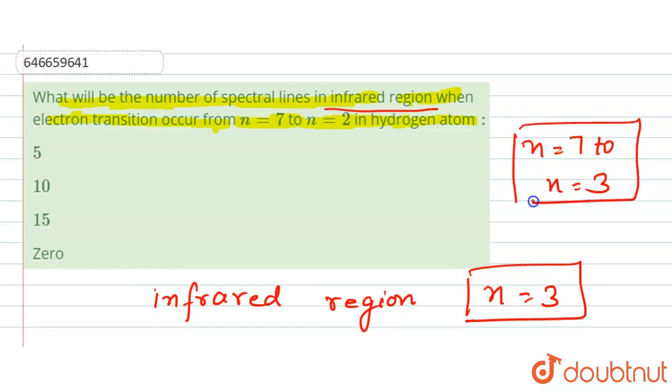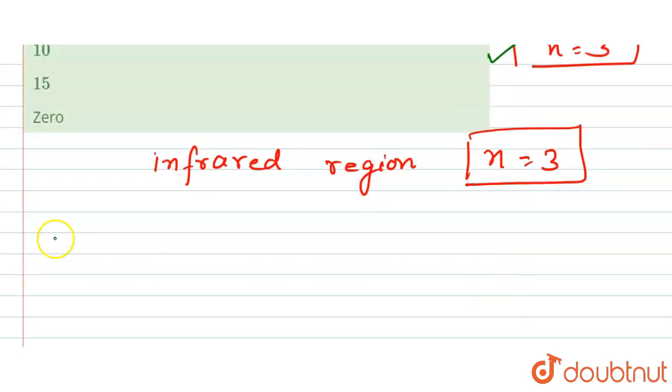Because the infrared region starts from n equals 3, okay? Here suppose we have this, this, this. Here it is n equals 1, n equals 2, n equals 3. The infrared region starts from this point.